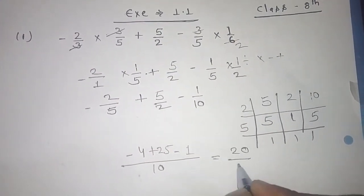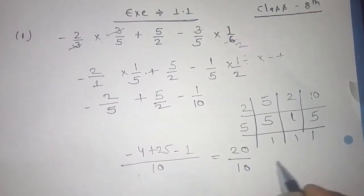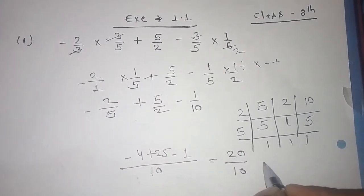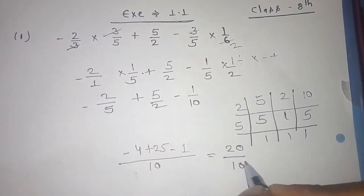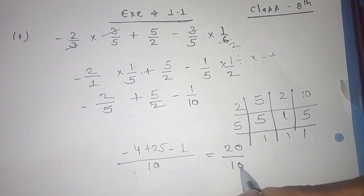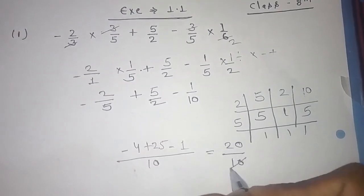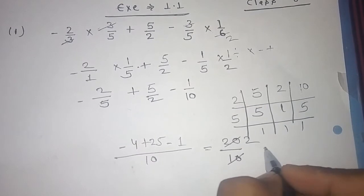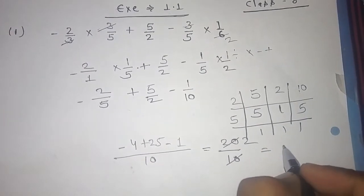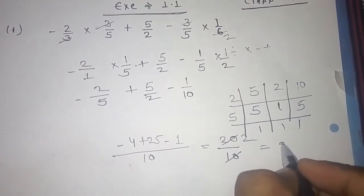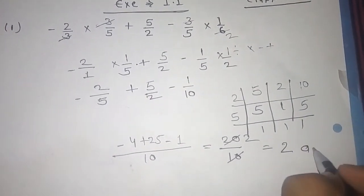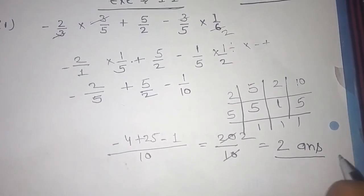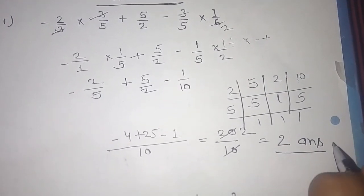We get 20 upon 10. We are going to divide both — 10 divided by 10 and 20 divided by 10 — so the answer is 2. This is our answer and we found it in a very simple way.